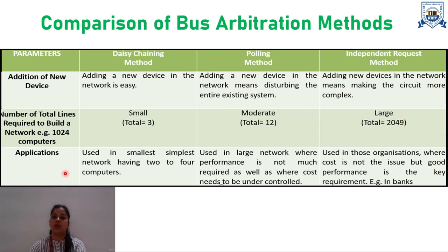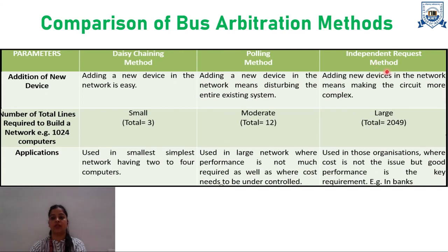In terms of application: daisy chaining is used in the smallest, simplest networks with two to four computers. Polling is used in large networks where performance is not critical but cost needs to be controlled. Independent request is used in most large organizations where cost is not an issue but good performance is the key requirement — for example, in banks.